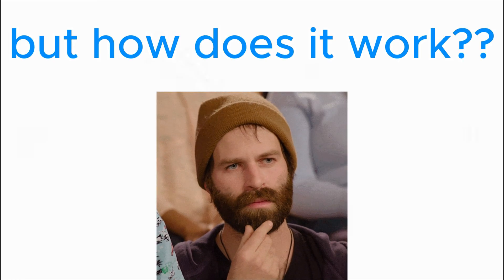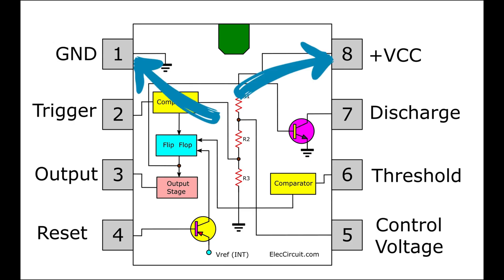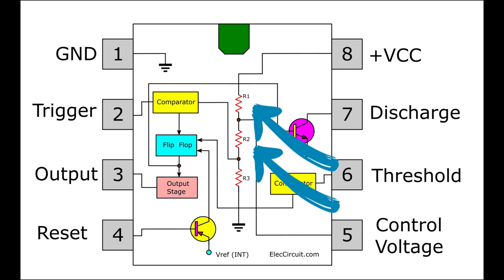But how does it work? When a voltage is applied to the VCC and ground pins, in our case 12V, these resistors will split the voltage into 4V and 8V, with the 4V going to the trigger comparator. If the trigger voltage is greater than 4V, timing will start, and the 8V will go to the threshold comparator. Therefore, if the threshold voltage is greater than 8V, timing will stop.